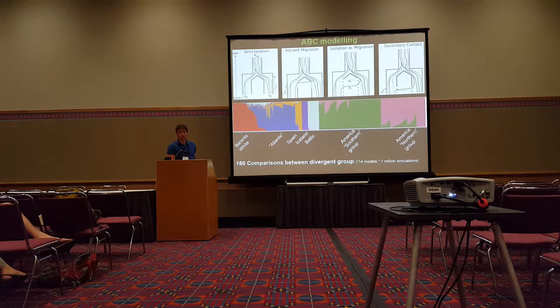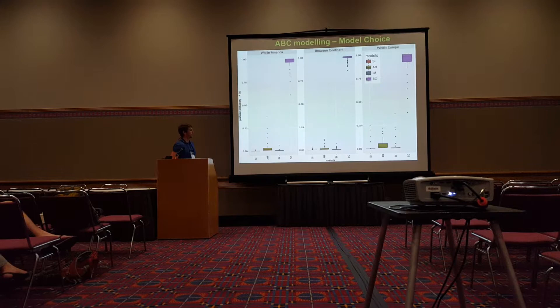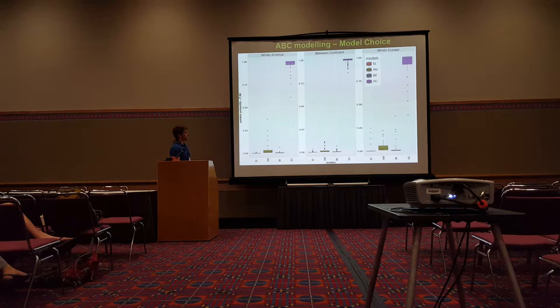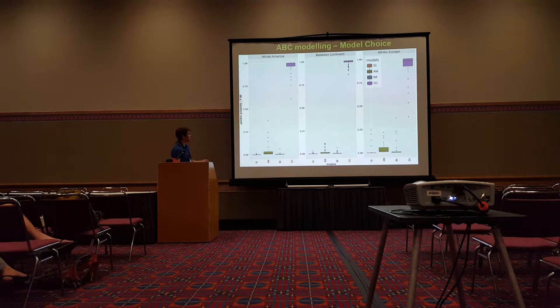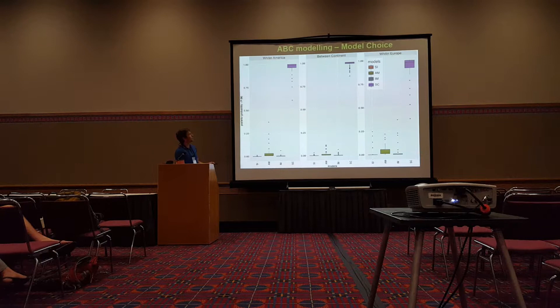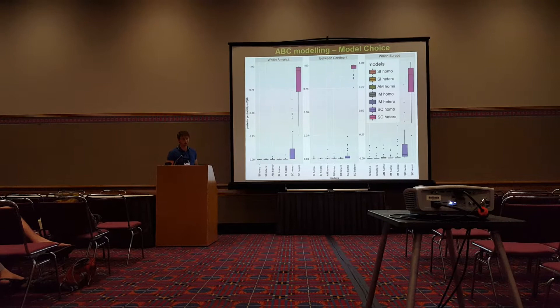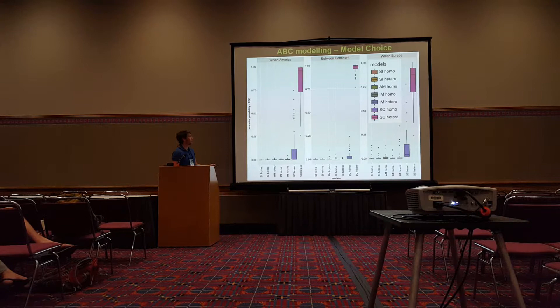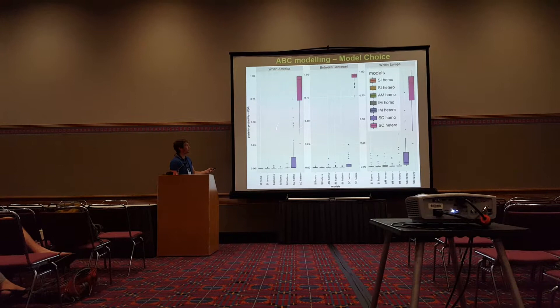Looking at the results of model comparison, we see the posterior probability of selecting each of the four models, averaged over more than 160 comparisons. Both within and between continents, the best model is consistently the model of secondary contact. When we split the model choice according to whether we take into account homogeneous versus heterogeneous migration rate and effective population size, taking into account this heterogeneity tends to improve the results of model selection.